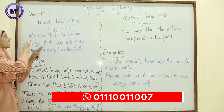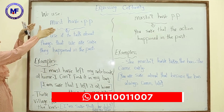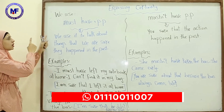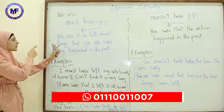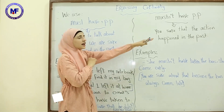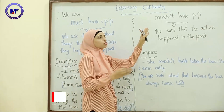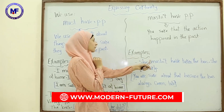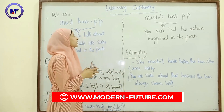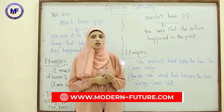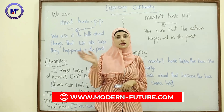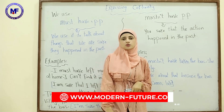So to summarize: use 'must have' when you are sure an action happened in the past, and 'mustn't have' when you are sure an action did not happen. Don't forget to like, share, and subscribe. See you soon, dear students. Goodbye!